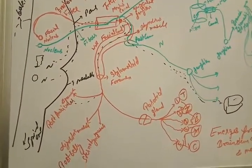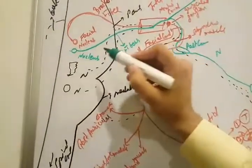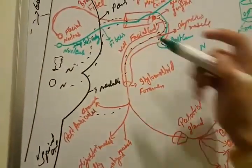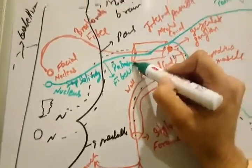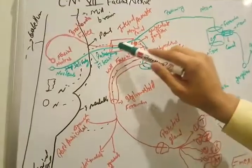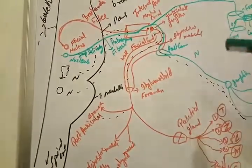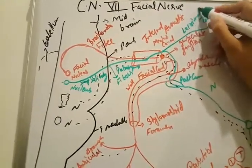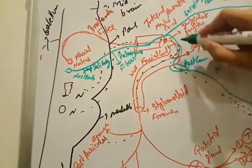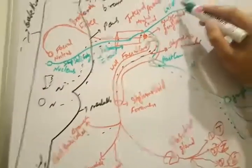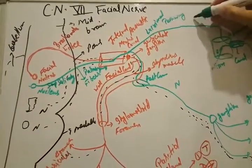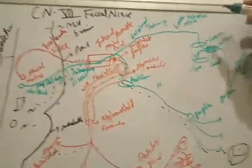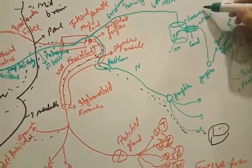Now I am going to explain the superior salivatory nucleus and its parasympathetic fibers. This nucleus is known as the superior salivatory nucleus, and its fibers are parasympathetic. These parasympathetic fibers also enter through the internal acoustic meatus canal but divide into two branches: the lacrimal pathway and the submandibular salivatory pathway. In the lacrimal pathway, the nerve is the greater petrosal nerve.